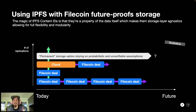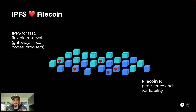IPFS is storage layer agnostic — the magic of IPFS content IDs is that they're a property of the data itself, which makes them storage layer agnostic, allowing for full flexibility and modularity. You can combine it with the storage layer of your choice: that could be Filecoin, which we think is a great option, but you may also store your data with a centralized cloud storage provider or other decentralized solutions. IPFS and Filecoin are perfect complements for each other. IPFS is great for fast, flexible retrieval over the IPFS network and can even be accessed through HTTP gateways. Filecoin answers the persistence problem by offering excellent persistence and verifiability through distributed storage deals, which any storage provider can accept.